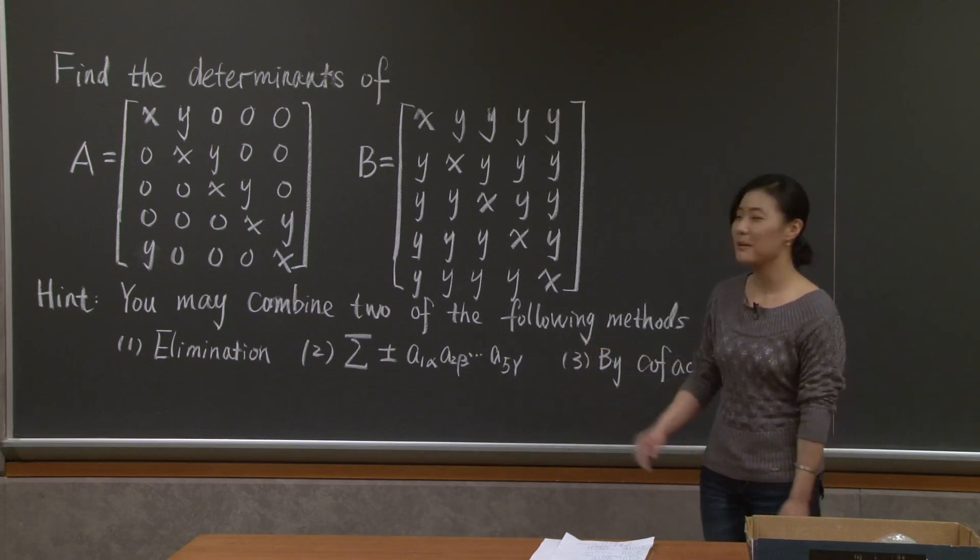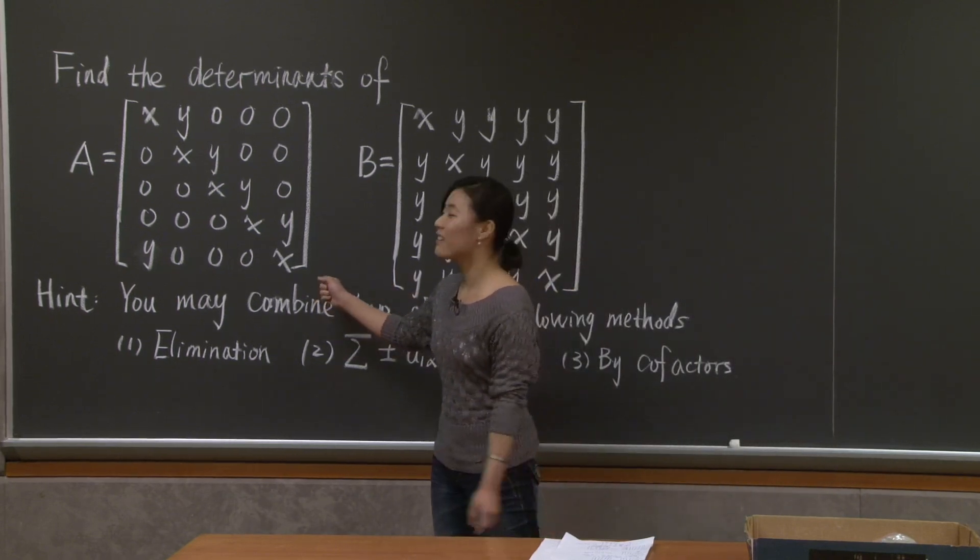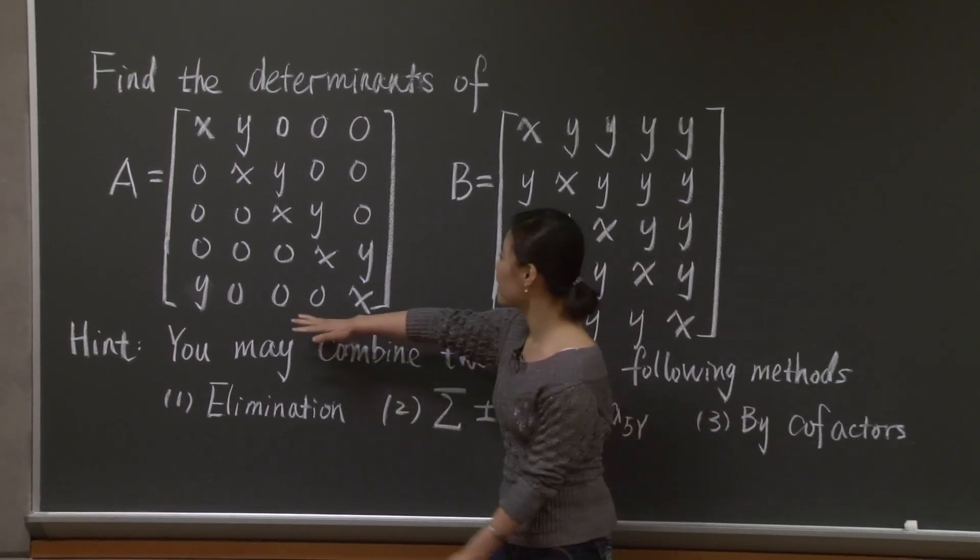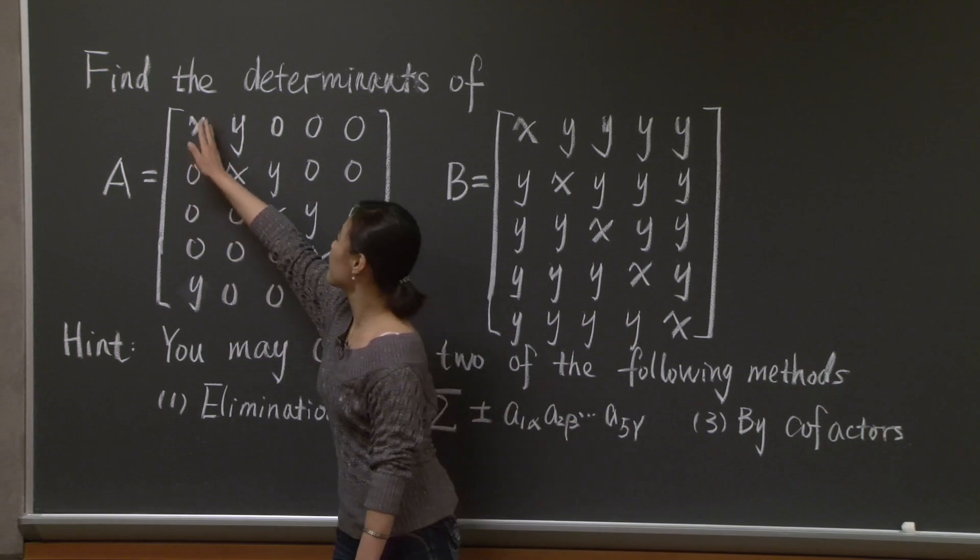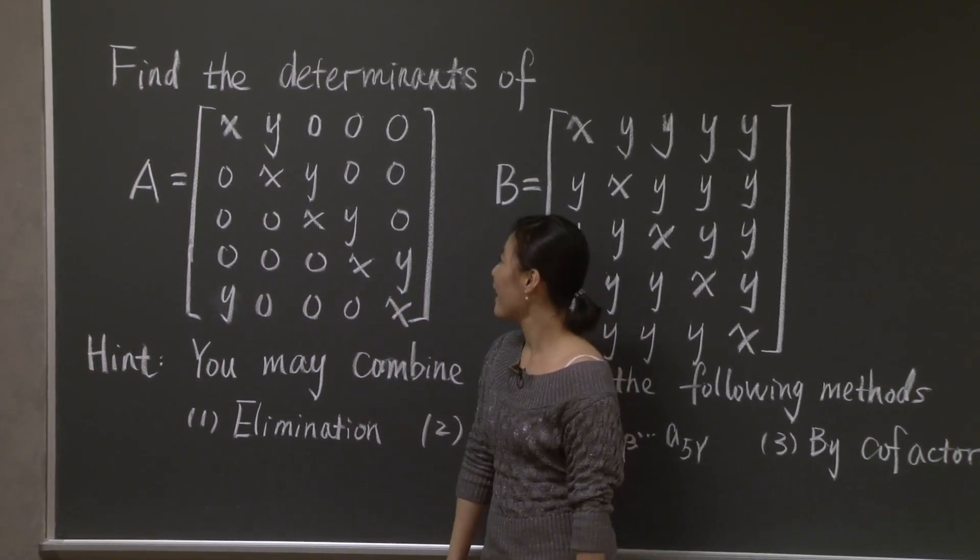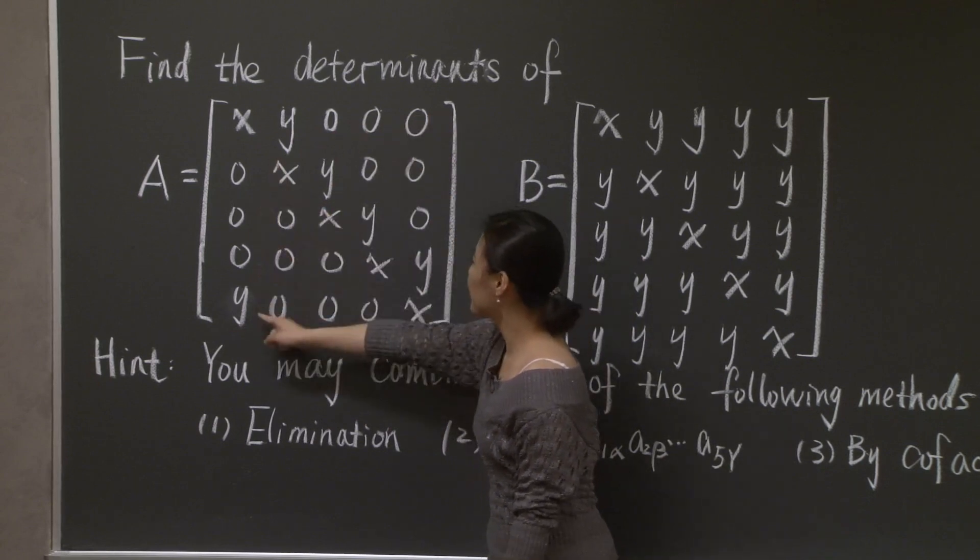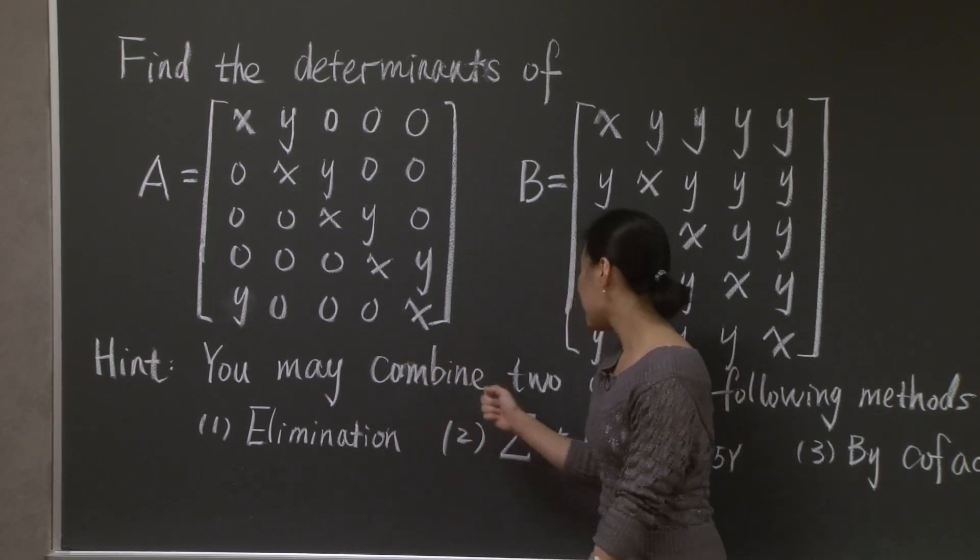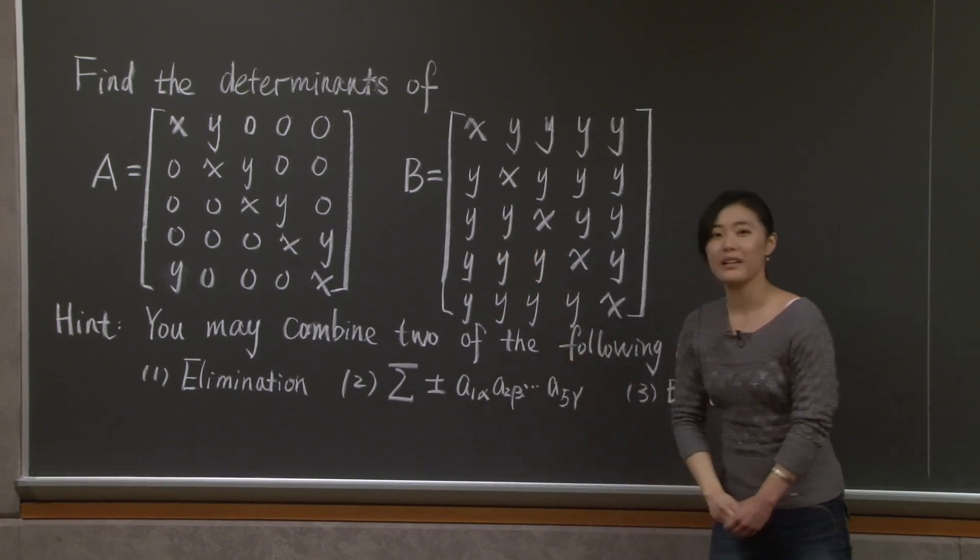I hope you just had some fun with these two problems. Now let's tackle them together. Let's look at matrix A first. As you can see, there are a lot of zero entries in matrix A. So perhaps you don't need elimination to introduce more zeros. Furthermore, we observe this pattern of A. And you notice that if I cover the last row and the first column, what is left over here is simply a 4 by 4 lower triangular matrix. And similarly, if you cover the first column and the first row, what is left over here is simply a 4 by 4 upper triangular matrix. This is telling us that we should calculate the determinant of A by the third method. So we should expand along the first column of A, and we calculate the cofactors.